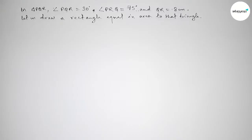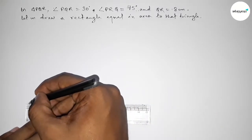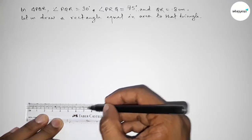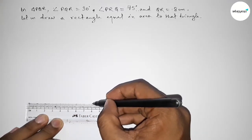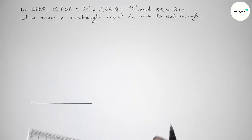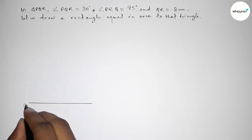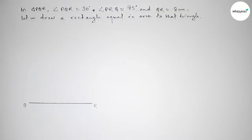First of all, we have to draw the given side QR equal to 8 centimeters. So this is the 8 centimeter line, taking point Q here and point R here. Next, we have to draw a 30 degree angle on the point Q.